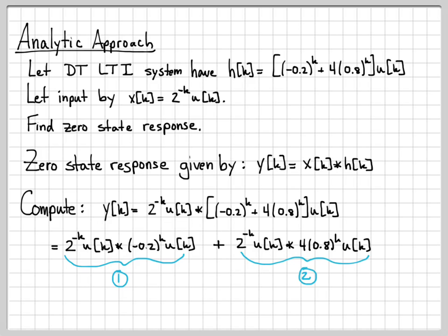I could compute these using the reflect, shift, and sum approach that we've been using. In this example, though, we're calling it the analytic approach. We're actually going to look these up in a table. So if you go look up in the table that you're provided, there is a pair that says if I compute γ₁^k with γ₂^k, that is equal to (γ₁^(k+1) - γ₂^(k+1))/(γ₁ - γ₂) times the unit step function.